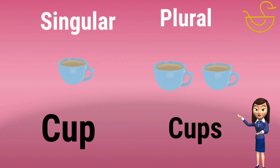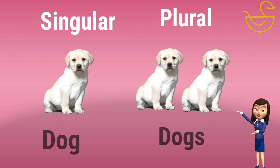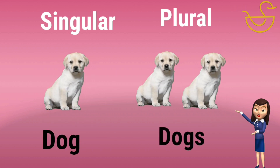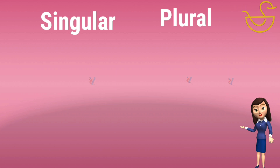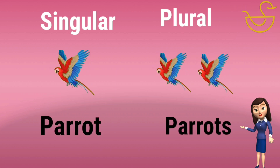Let's see some more examples. Cup — Cups. Dog — Dogs. Parrot — Parrots.